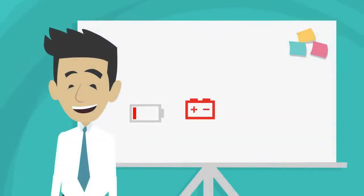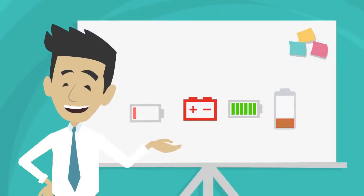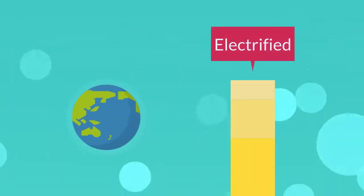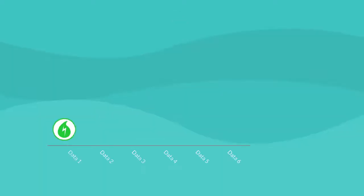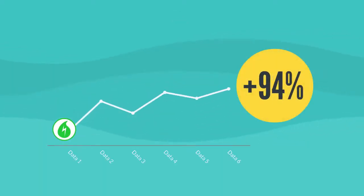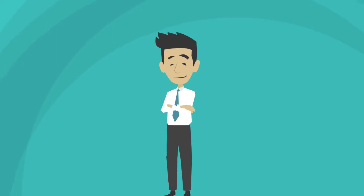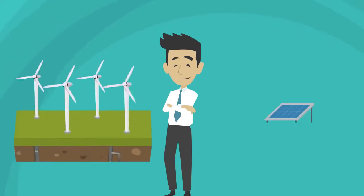These are becoming an increasingly important part of the world's energy systems, especially as our world is becoming increasingly electrified. However, the decarbonization of our grids means that we rely increasingly on the production of renewable energy through intermittent resources, such as wind and solar energy.